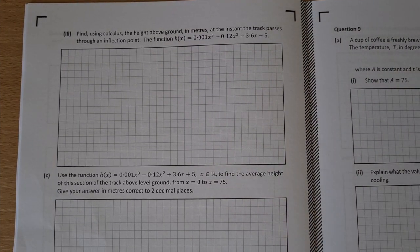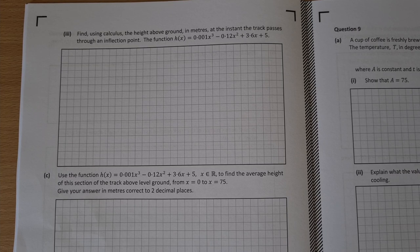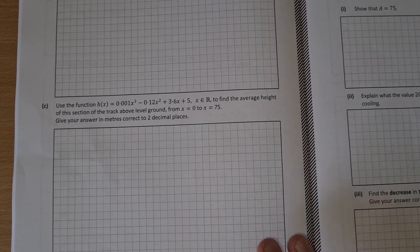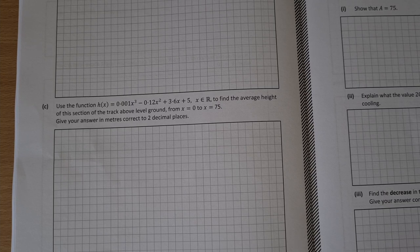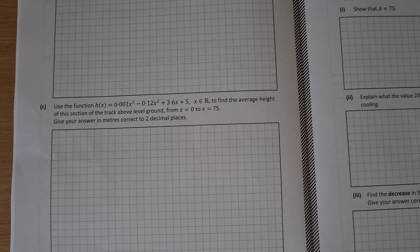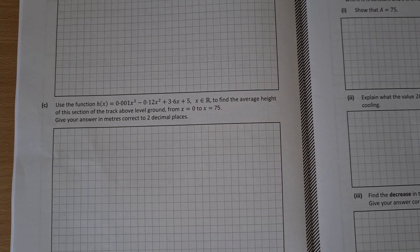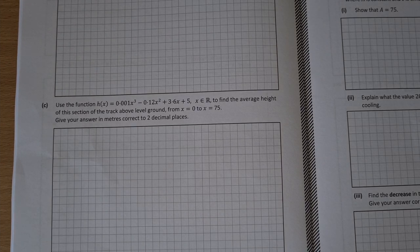Find using calculus the height above the ground in meters at the instant the track passes through an inflection point. So you have to figure out where the inflection point is and then find the height above the ground. So find the y value of it there. And then find the average height of the section of track above the ground. So you have your average height or your average value of a function formula there.